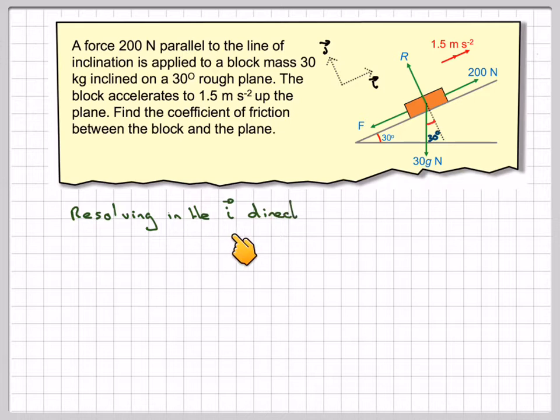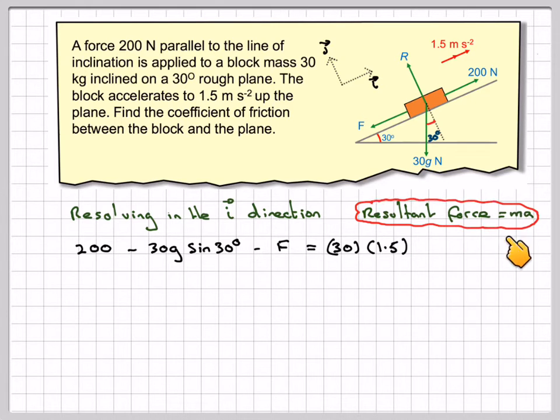Resolving in the I direction, we have 200 minus 30G sine of 30 for this force here acting back down the plane minus F is going to be equal to the mass of the block times the acceleration which is 1.5. This is the resultant force equal to MA from Newton's second law. That comes down to F being equal to 200 minus 30G sine of 30 minus 30 times 1.5.